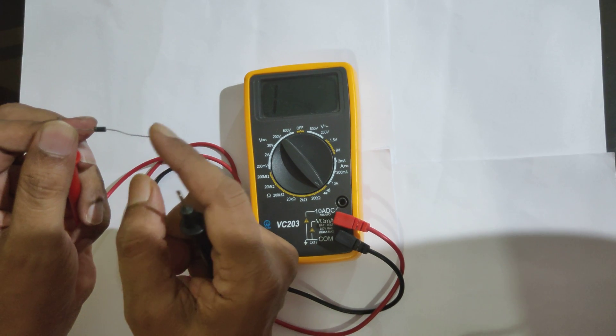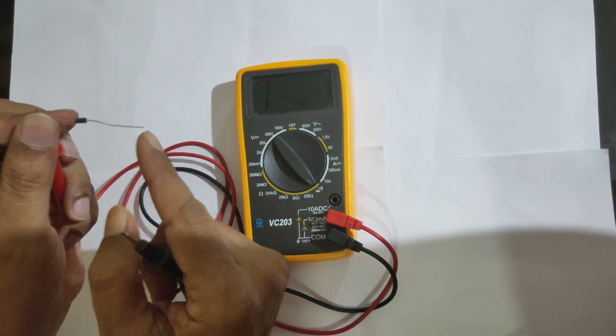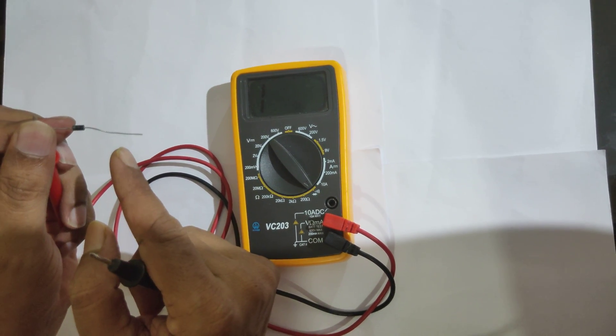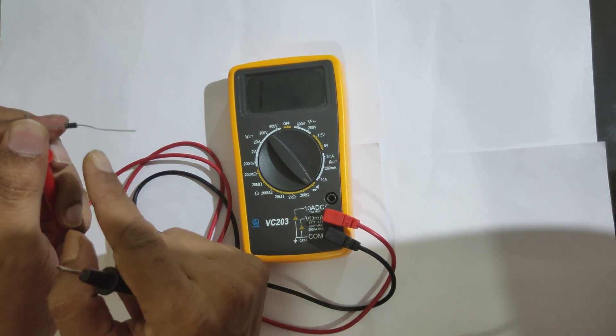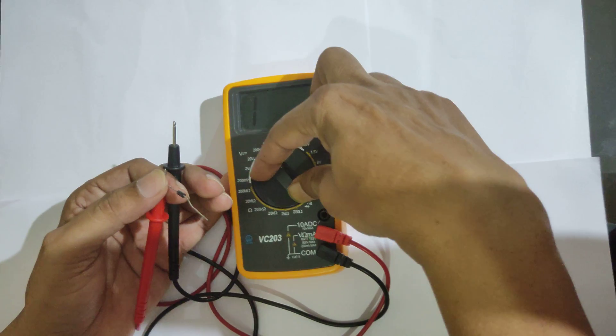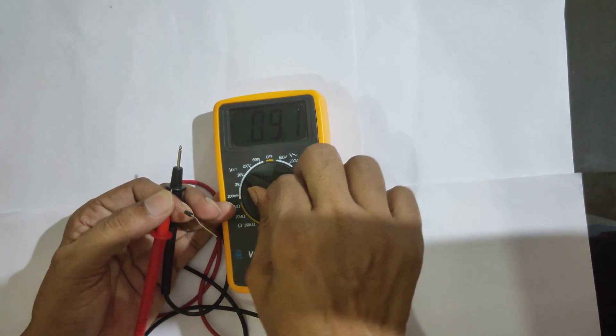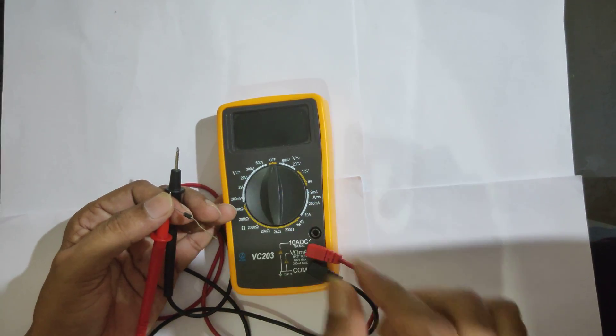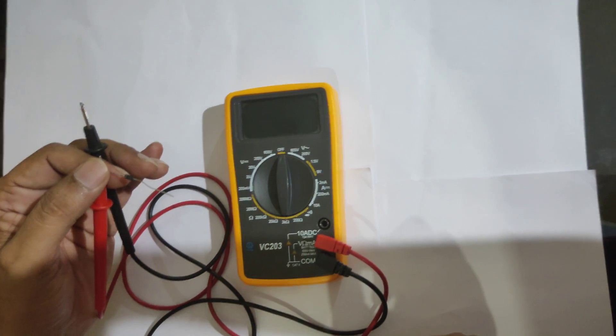But if the diode is not functioning, then current will flow in both directions. In this way you can test the diode in a circuit. After testing the diode, you turn the dial to the off position so that no battery will be drained from the multimeter. Thank you.